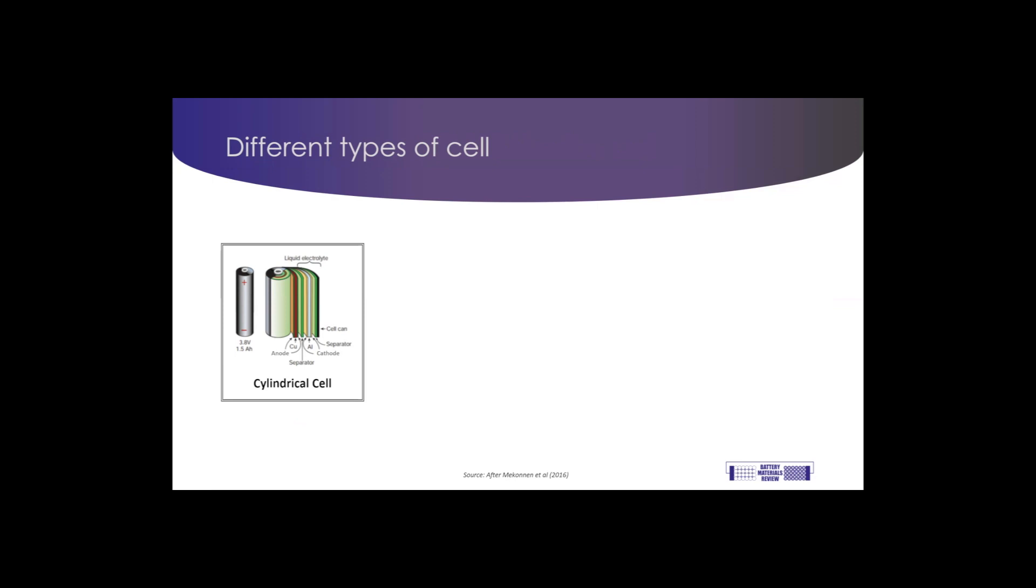The second type of cell to talk about is the prismatic cell. This is used by electric vehicles like the Nissan Leaf and BMW i3. It can be scaled to a bigger size, meaning fewer cells are needed to make a battery.